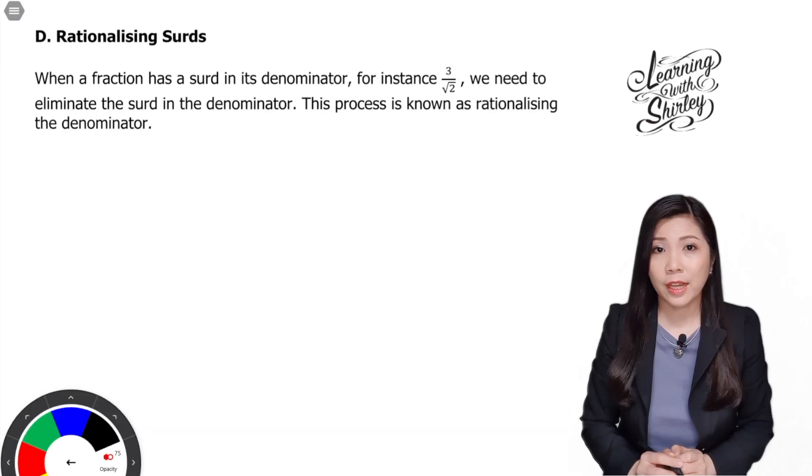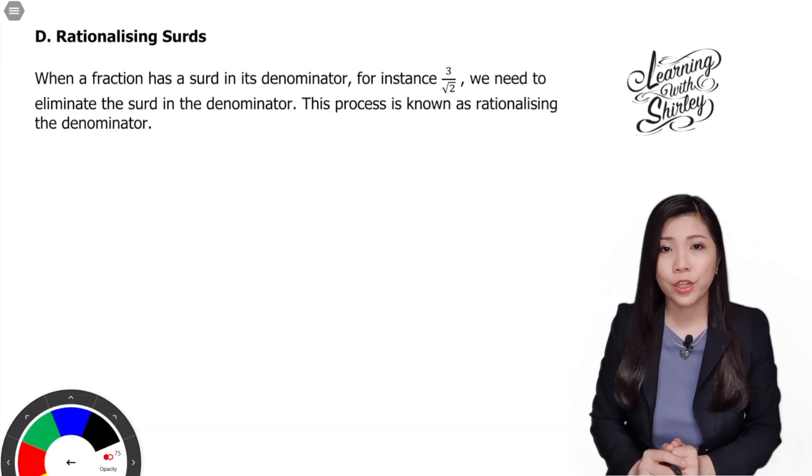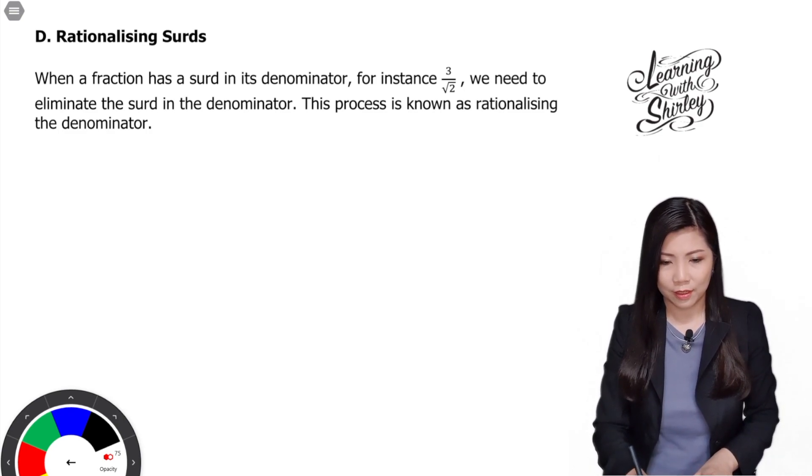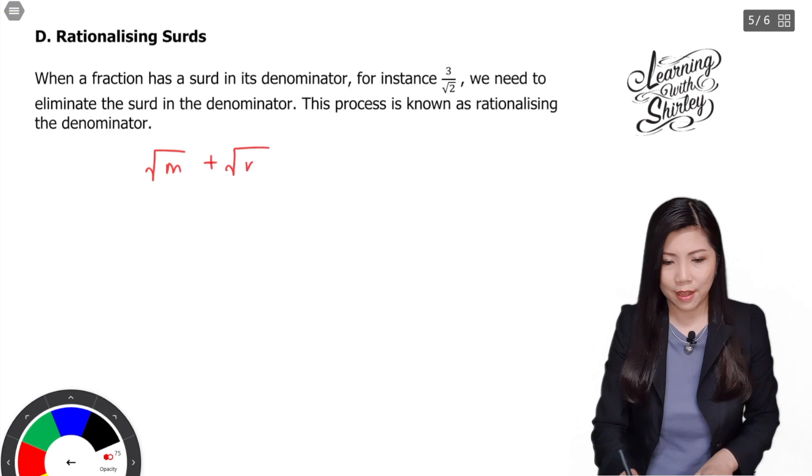When a fraction has a surd in its denominator, for instance 3 over surd 2, we need to eliminate the surd in the denominator. This process is known as rationalizing the denominator.